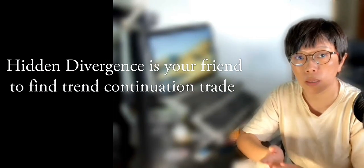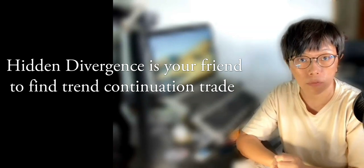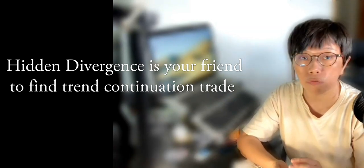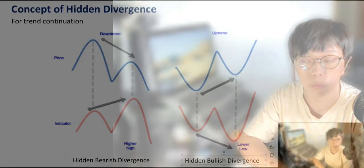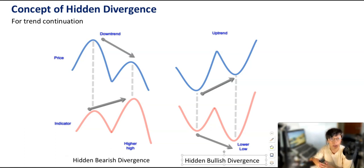Before I talk about the trade on Gold, let me explain more about what hidden divergence is, because hidden divergence is a very useful tool to find trend continuation. Generally, there are two types of divergence concepts. One is classical divergence, which is more popular and more commonly known. The other is hidden divergence. For classical divergence, it is mainly to show reversal, but hidden divergence is to show trend continuation.